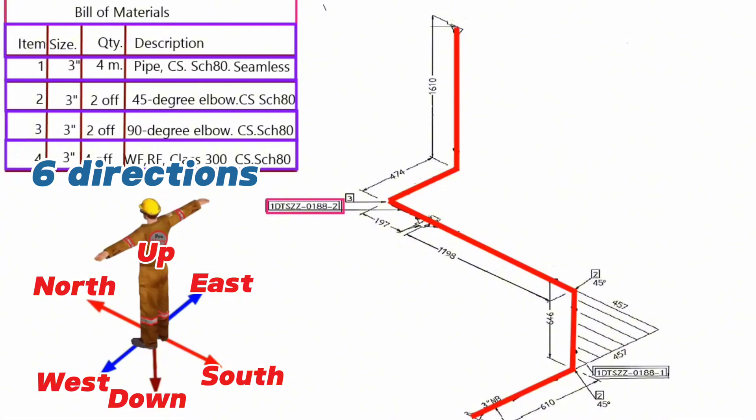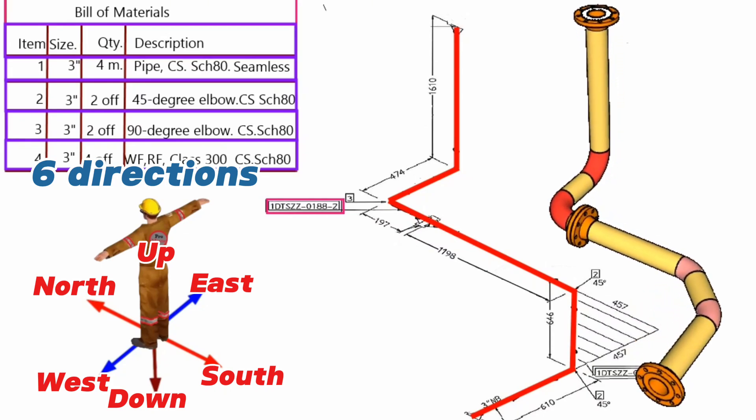Reading piping isometric drawing is successfully completed. Also, you can see 3D model of this pipeline together with the pipe drawings. This 3D model helps you easy reading and understand piping isometric drawing.